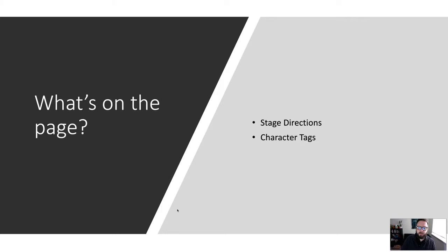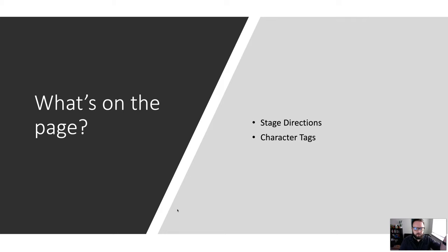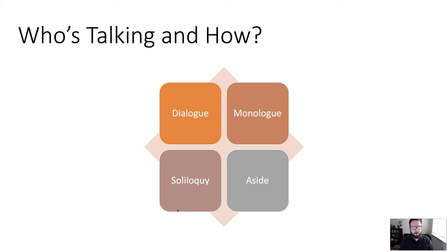Character tags, on the other hand, are essentially name tags indicating when characters are speaking. Because we don't have a narrator in drama, we rely on these tags to tell us which character is speaking at any given moment.